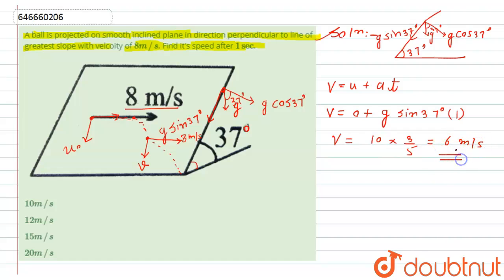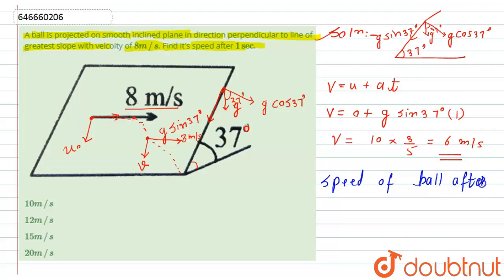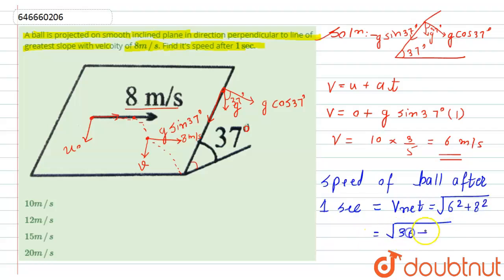We already had the horizontal velocity as 8 m/s and we found the vertical velocity as 6 m/s. The net speed of the ball after one second is v_net = √(6² + 8²) = √(36 + 64) = √100 = 10 meters per second. So the net velocity of the ball after one second is 10 m/s, making option one the correct answer.